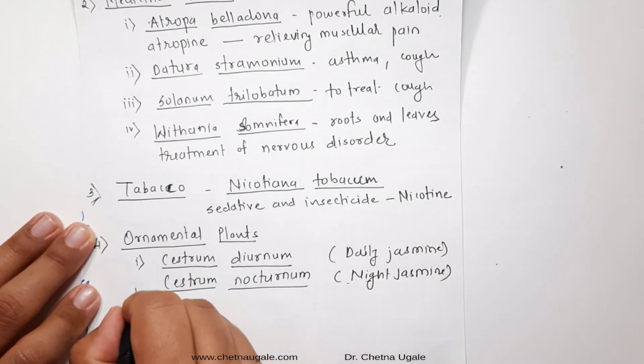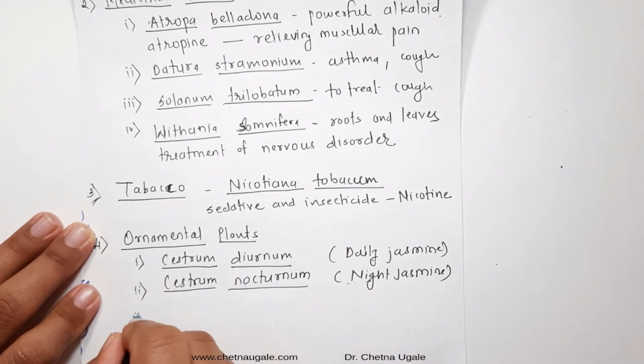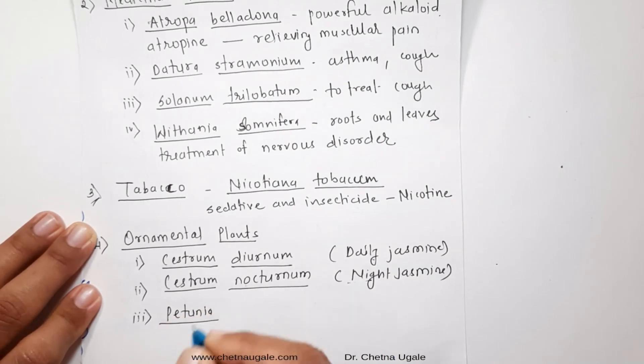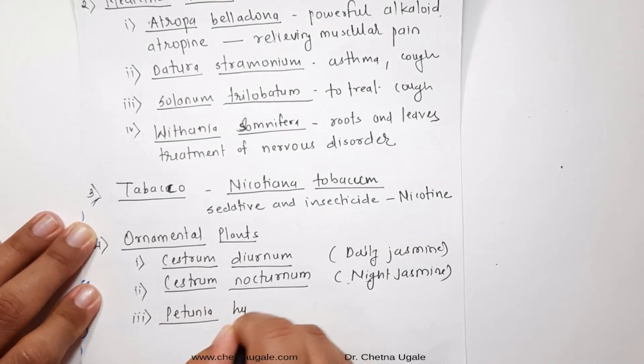The next one is Petunia hybrida. It is largely used as one of the garden plants and it is known for its variation in colors.